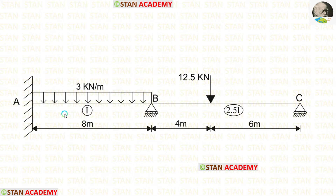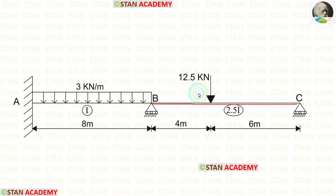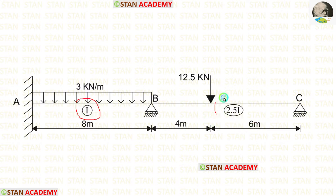In this beam, there are two spans: span AB and span BC. In span AB, there is a uniformly distributed load of 3 kN/m acting for the full span. In span BC, we have an eccentric point load of 12.5 kN acting at 4 m from point B. The length of span AB is 8 m and the length of span BC is 10 m.